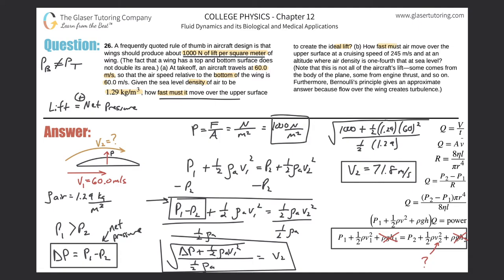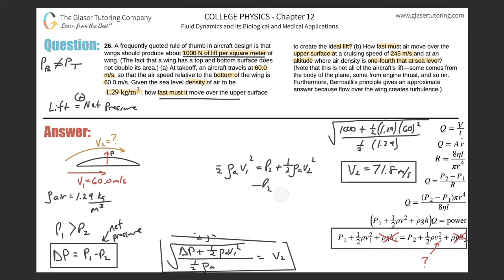How fast must the air move over the upper surface at a cruising speed of 245 meters per second now and at an altitude where the air density is one fourth that of sea level. So basically, we're going to use the same equation down here, guys. Same equation. What I'm going to do is I'm just going to erase some of this work so that we can have some room to actually calculate. So it's the same equation.